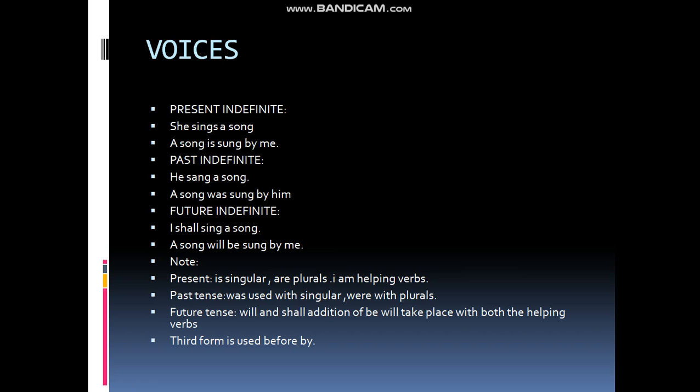Next, future indefinite tense: 'I shall sing a song.' The passive form is: 'A song will be sung by me.' Here, 'a song' is the object. 'Shall' or 'will' can be used — 'will be' or 'shall be' are both correct. 'Sing' changes to the third form 'sung,' and 'I' changes to 'me.'